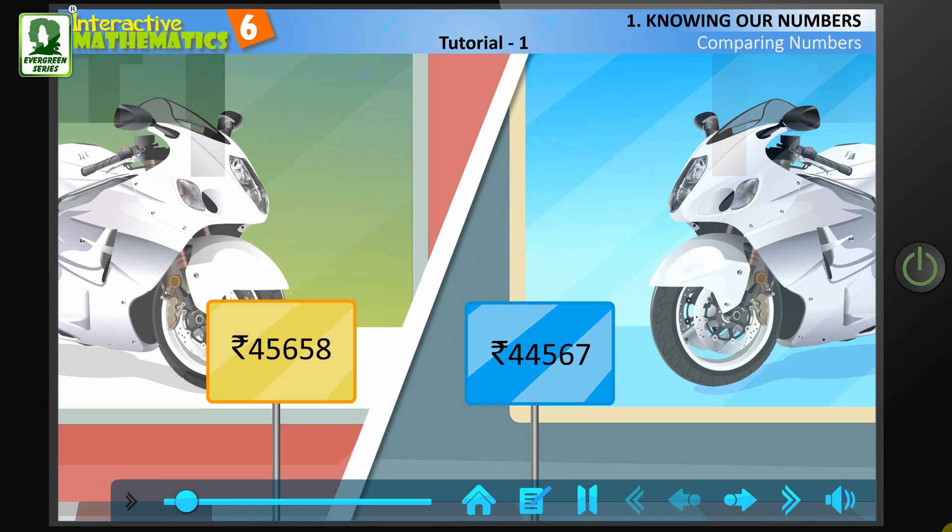And in another showroom, the price of the same motorbike is Rs. 44,567. Which showroom should he buy the motorbike from?